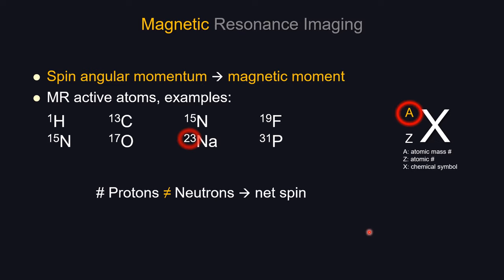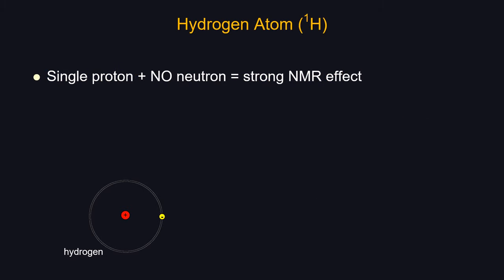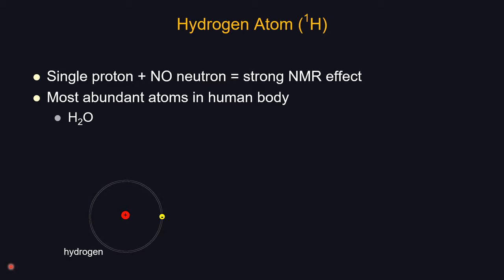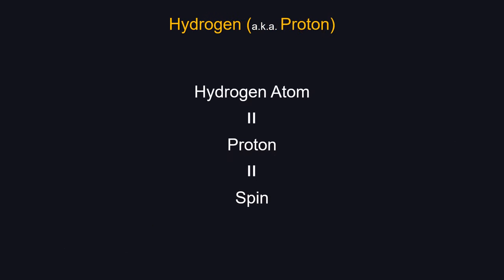Sodium, for example, can be used for MR imaging. Helium has 2 protons and 2 neutrons — no net spin — so helium is not an MR active atom. In clinical MR imaging, we image the hydrogen atom. Why hydrogen? First, it comprises a single positively charged proton without a neutron, giving it a very strong NMR effect. More importantly, it is the most abundant atom in the human body — 70% of us is water, plus lots of fat. In textbooks, the terms hydrogen atom, proton, and spin are used interchangeably.